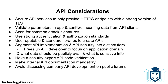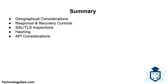You need to secure API services to only provide HTTPS endpoints with a strong version of TLS. Validate parameters in the application and sanitize incoming data from API clients. Explicitly scan for common attack signatures. Use strong authentication and authorization standards. Use reputable and standard libraries to create the APIs. Segment API implementation and API security into distinct tiers, freeing up the API developer to focus on the application domain. Identify what data should be publicly available versus sensitive. Have a security expert do API code verification. Make internal API documentation mandatory, and avoid discussing company API development on public forums.